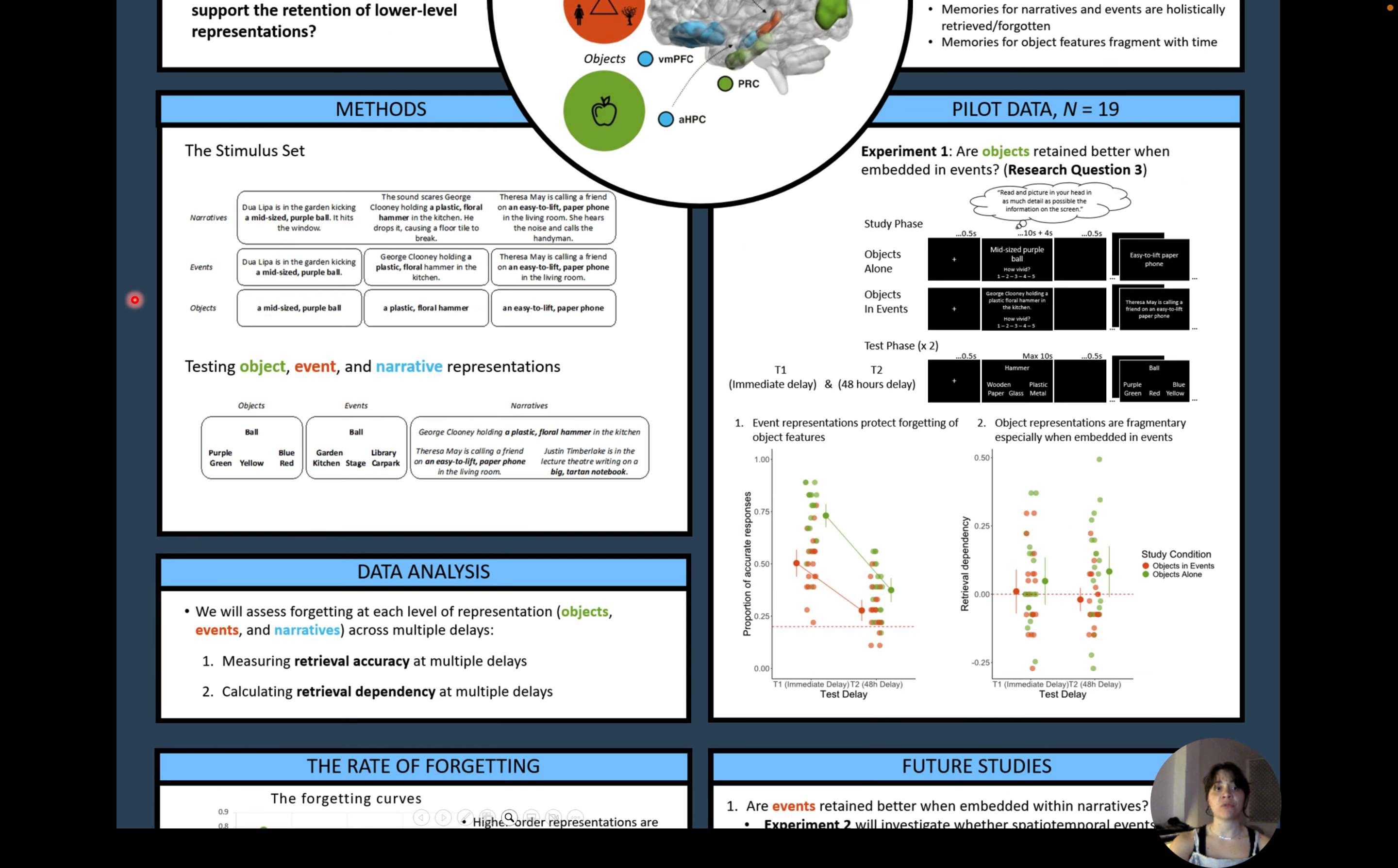To answer our research questions, we created a highly controlled stimulus set composed of objects, events and narratives. Each object incorporated two independent features, for example, a mid-sized purple ball. Each event then was a triplet composed of a person, location and object, for example, Olivia kicking a set ball in the garden. Narratives were then designed to causally and temporally link three of these events together. We then constructed different memory tests to be able to investigate forgetting at different levels of the representational hierarchy. In each test, we plan to measure retrieval accuracy and retrieval dependency at multiple time points.